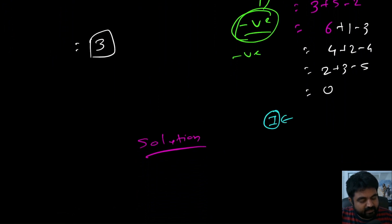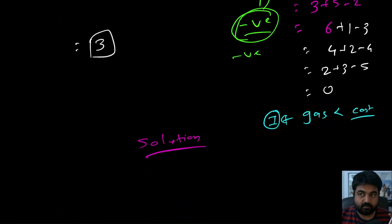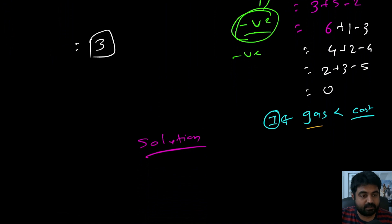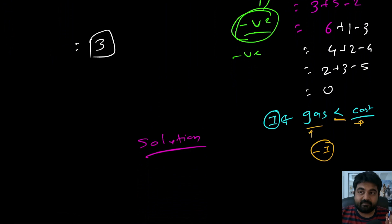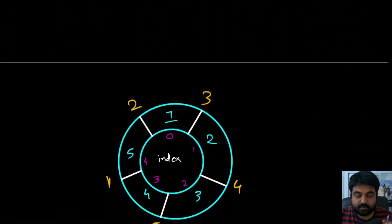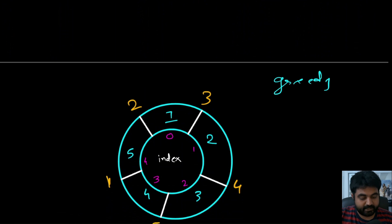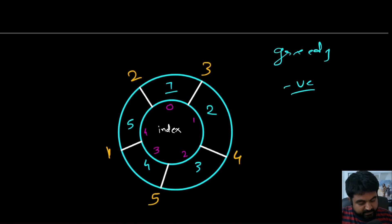One critical condition: the only way we cannot complete the circuit is if the total gas is less than the total cost. We can check this immediately by summing all values in both arrays and comparing them. If total gas is less than total cost, return minus one right away. Otherwise, we apply the greedy approach — take the first value, try the solution, and if the tank goes negative at any point, pick the next starting value.